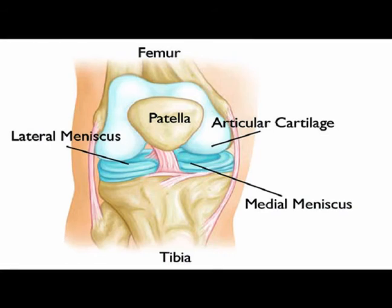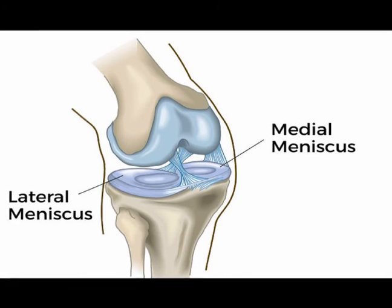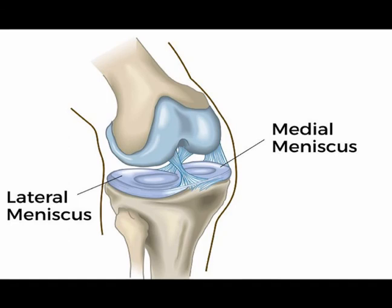The functions of the meniscus are to absorb shock, distribute weight bearing forces, help to provide stability to the knee, help to facilitate nutrition, and help with lubrication. They also assist in knee joint proprioception. Proprioception is the body's awareness of where you're at in space. So extremely important structures, the medial and the lateral meniscus.